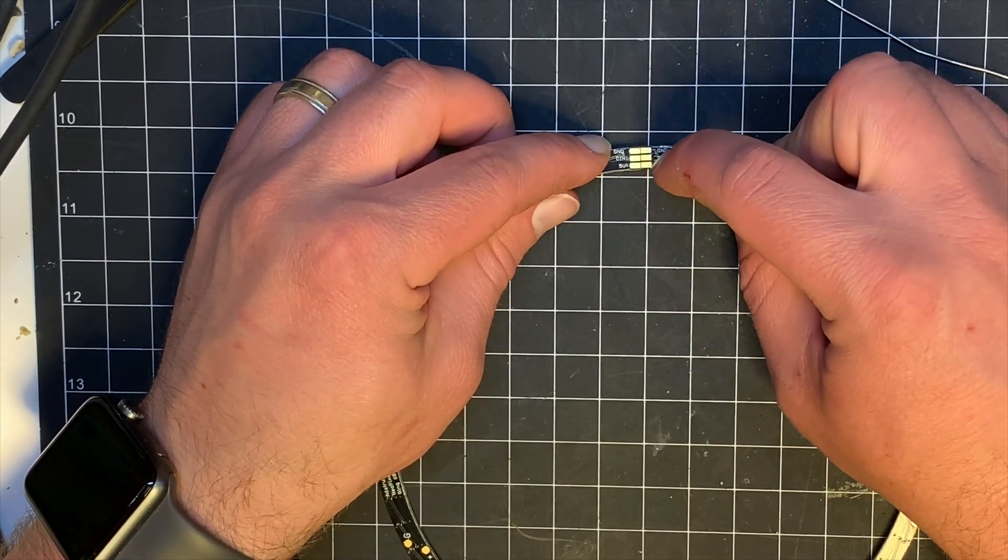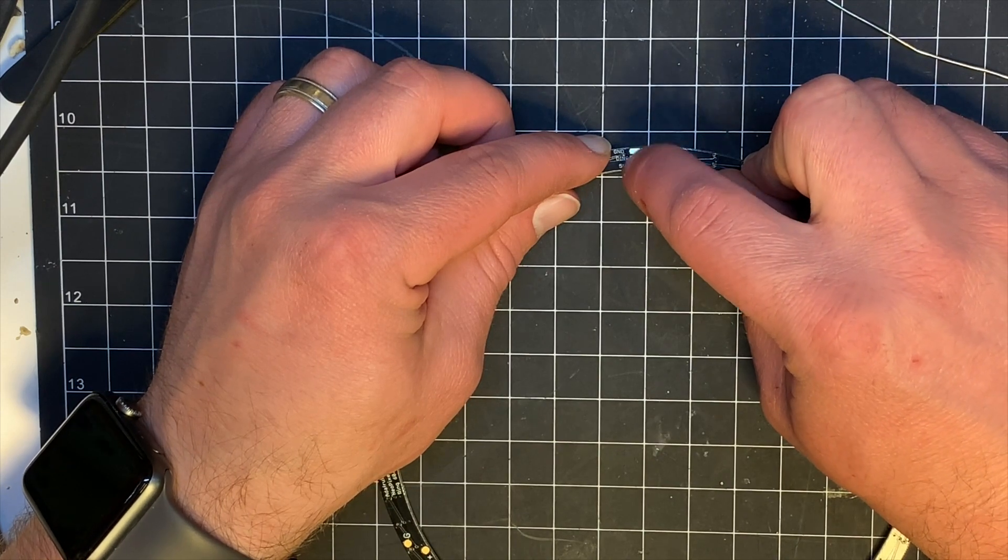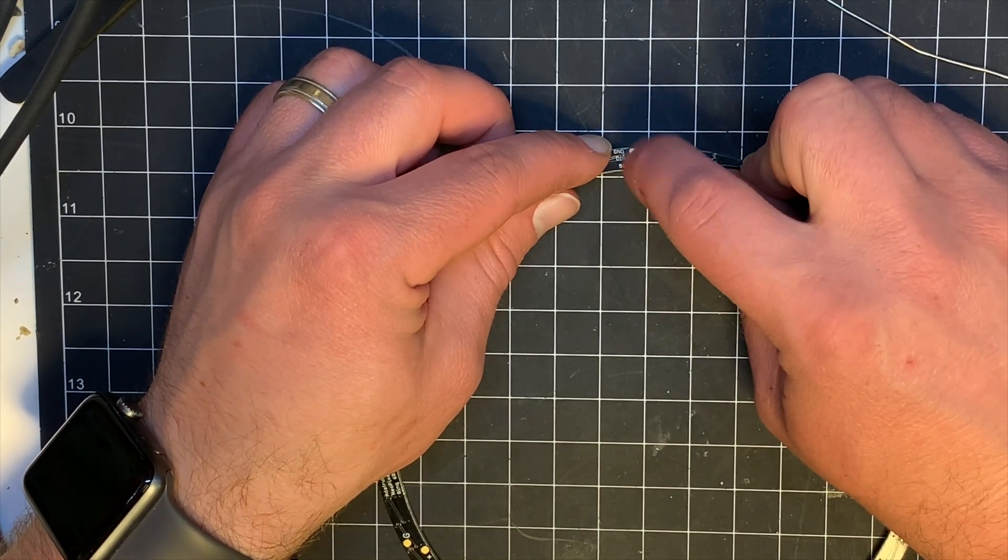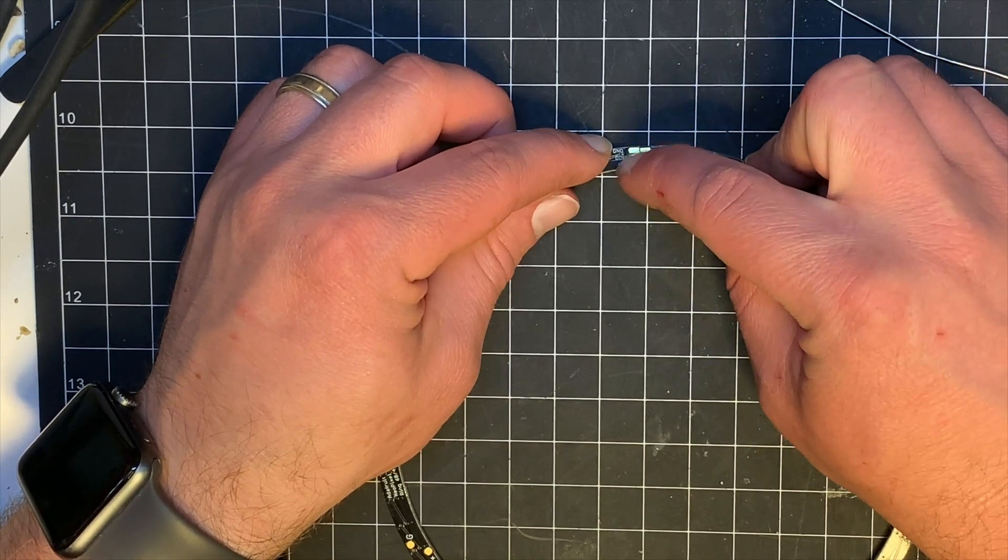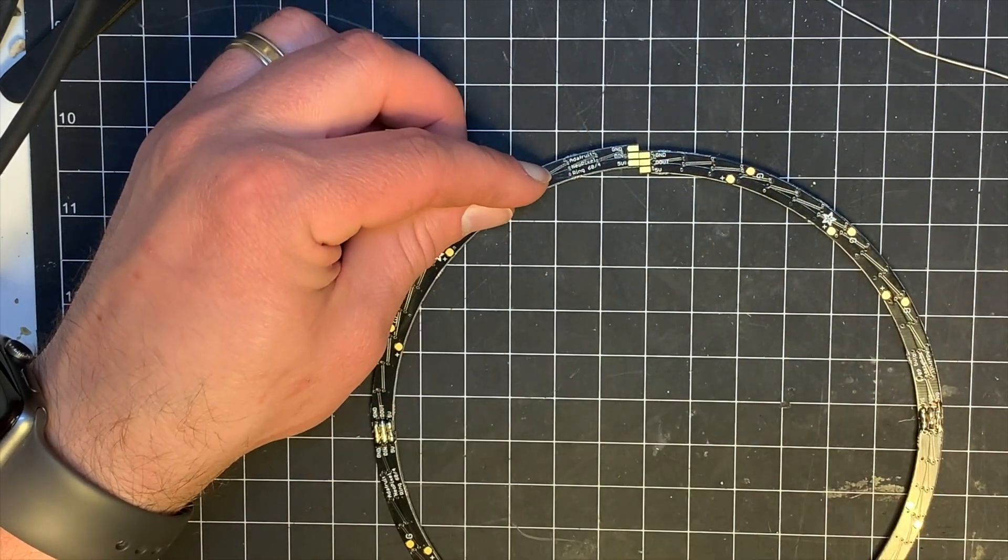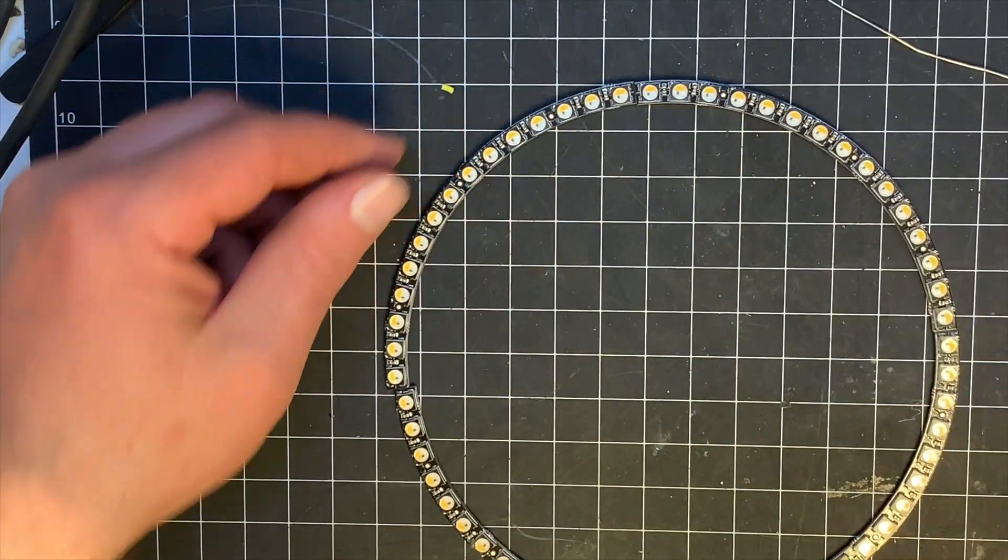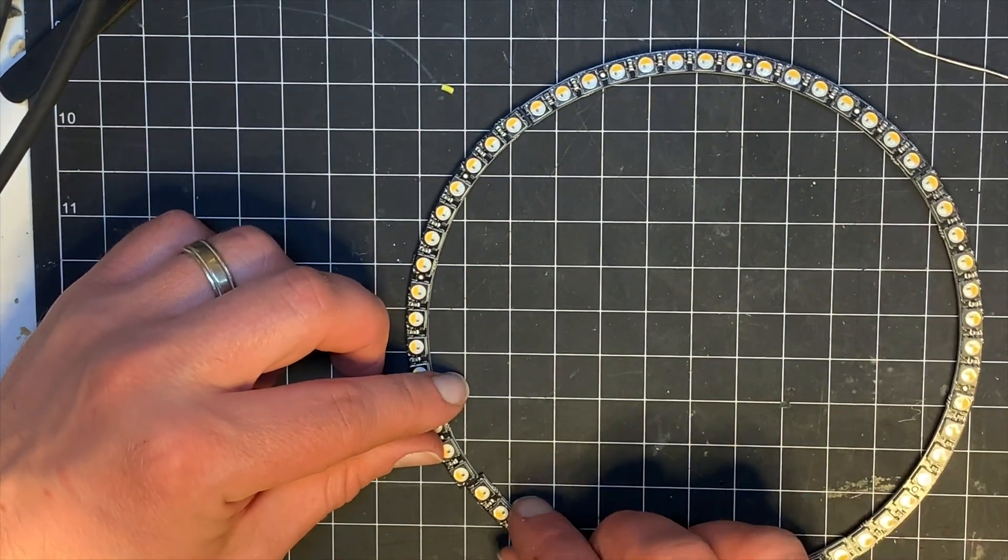You're going to be putting one wire, probably on the inside is my guess, the digital in, then that will communicate through the ring to all your other Neopixels.